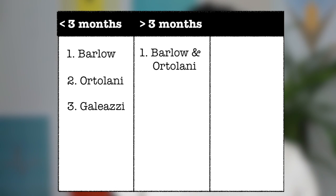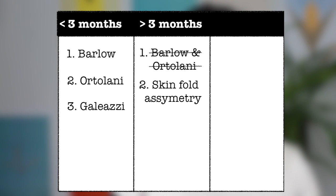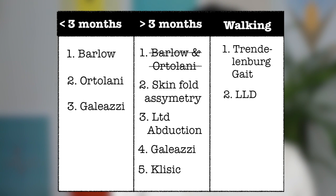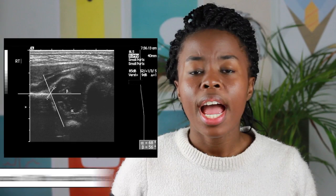In infants greater than 3 months old, you cannot rely on the Barlow-Ortolani test, as these can test negative due to soft tissue contractions at the hip. Here you must look for asymmetry in the skin folds, limited hip abduction, as well as a positive Galeazzi and Klisic test. For children of walking age, you must look for a Trendelenburg gait, limb length discrepancy, as well as lumbar lordosis.